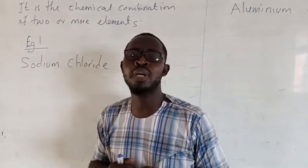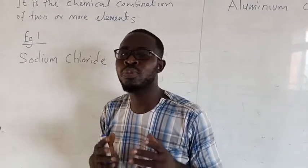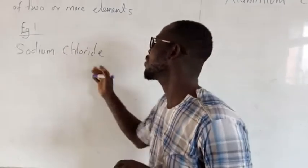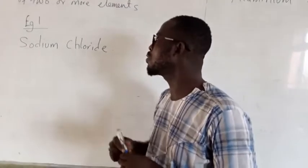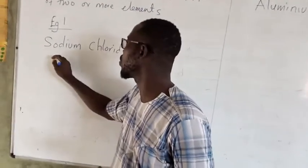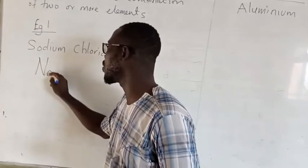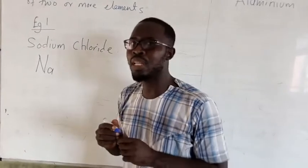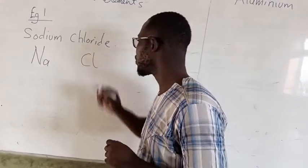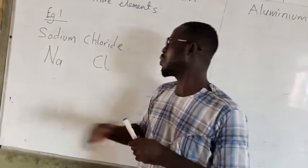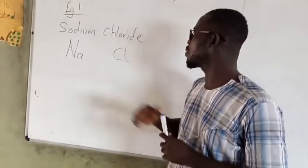The one that we use to prepare our soup, stew. That is sodium chloride. Now for us to write this compound, first we need to write the element sodium. Sodium is Na. Remember, first 20 elements. Sodium. And then chlorine, Cl. So sodium and then chlorine.